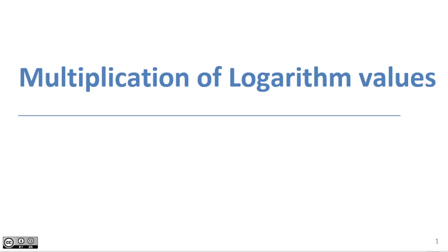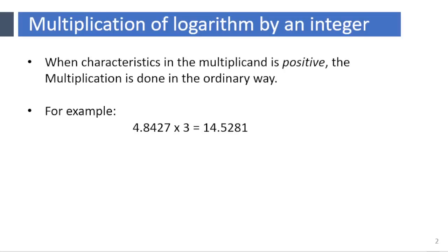Hello viewers, welcome back. In this video you will learn multiplication of logarithm values. When characteristics in the multiplicand is positive, the multiplication is done in the ordinary way. For example, 4.8427 × 3 = 14.5281.